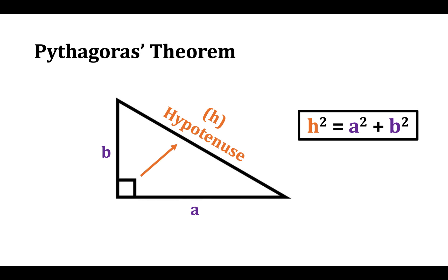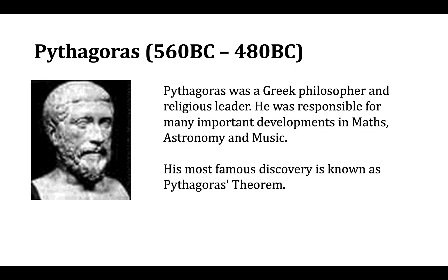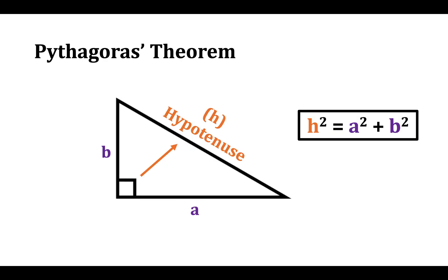You might have heard of Pythagoras before. He lived from 560 BC until 480 BC. He was a Greek philosopher and religious leader, and he was responsible for many important developments in maths, astronomy, and music. His most famous discovery is known as Pythagoras' theorem, which is what we have just learned about.